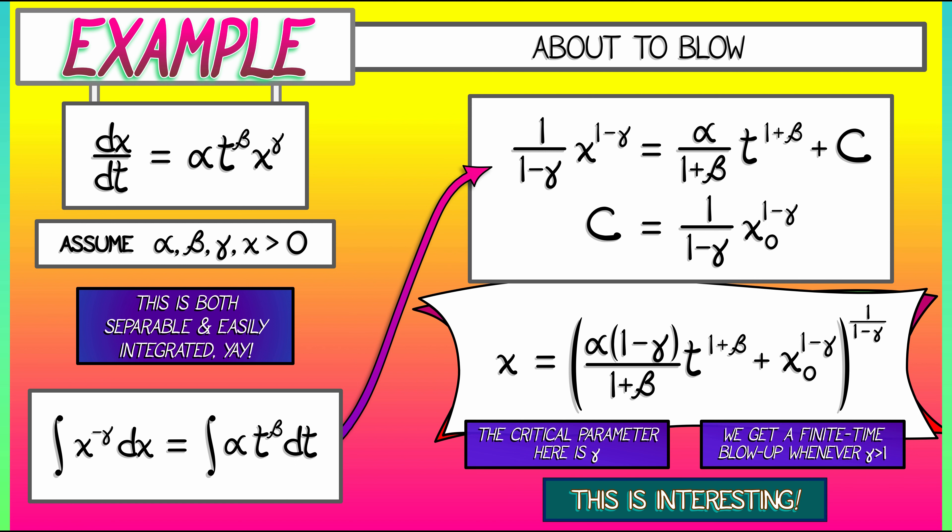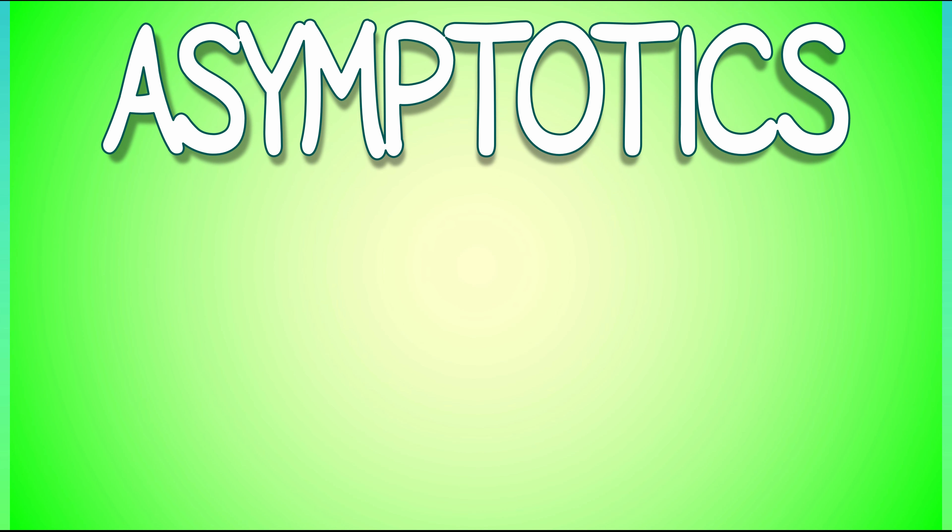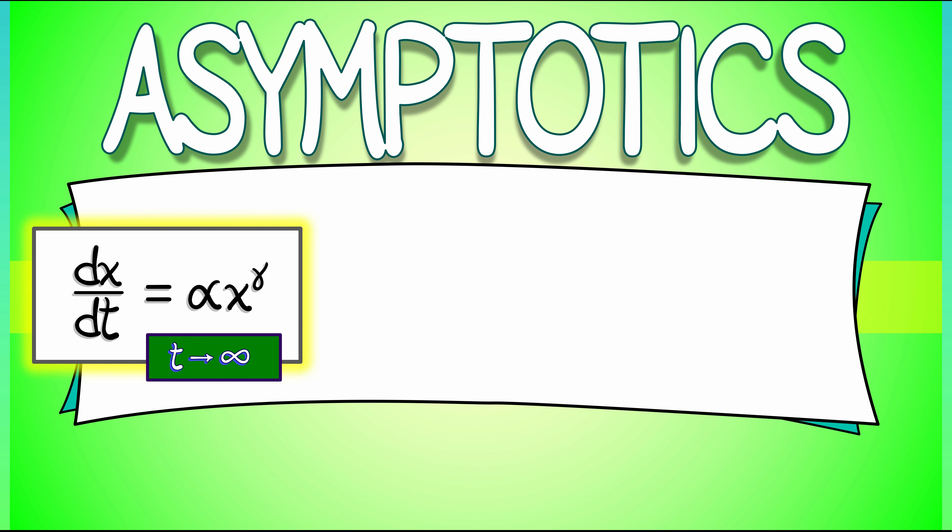Now, this is really interesting, because it tells us what the critical parameter is for that finite time blow up. Let's think for a moment in terms of asymptotics, and let's look at the simpler situation where we've got dx/dt is proportional to x to the gamma. Consider what happens to that as t goes to infinity. What does the solution do? When gamma equals 1, we know this. This is our old friend the linear differential equation, and its solution is an exponential function. Indeed, x is in big O of e to the alpha t. x is exactly some constant times e to the alpha t.